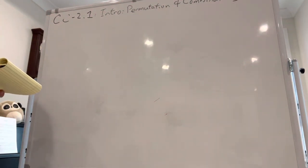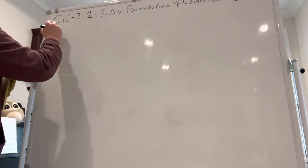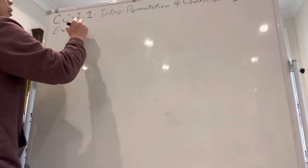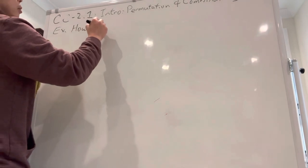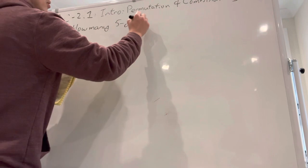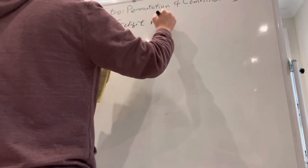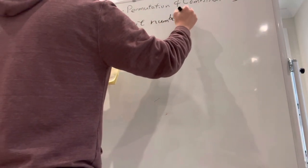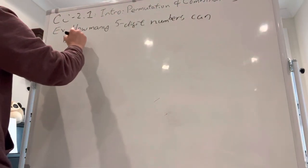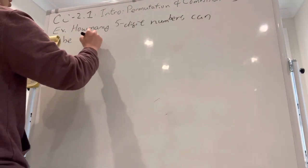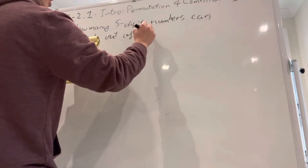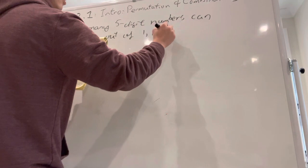I'm going to do an example first. How many five-digit numbers can be made out of 1, 1, 1, 3, 8?